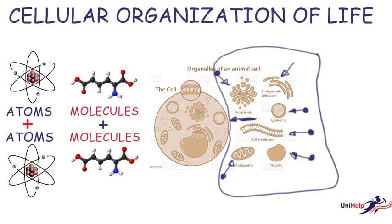If you guessed correctly, those are the three cell theories — the first two stated by Schleiden and Schwann between 1838 to 1839.